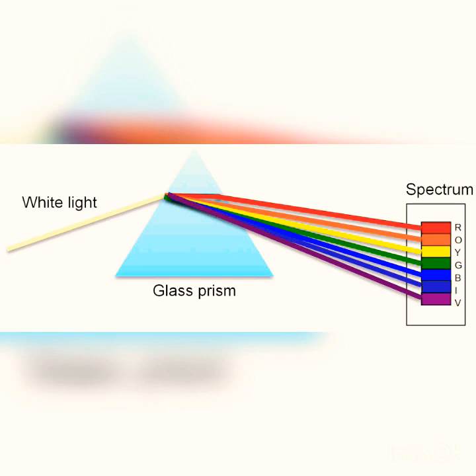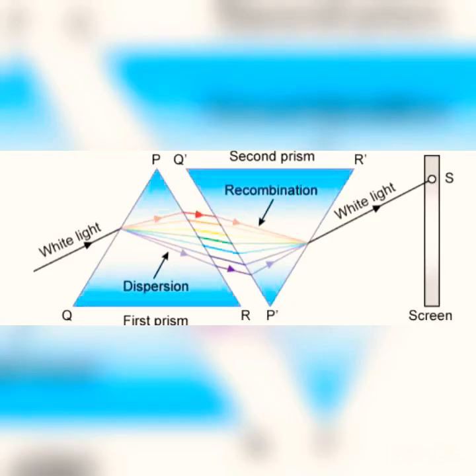Isaac Newton was the first scientist to use a prism to obtain a spectrum of light. He tried to split the colors of the spectrum of white light further by using another similar prism, but he could not get any more colors. He then placed a second identical prism in an inverted position with respect to the first prism, which allowed all the colors of the spectrum to pass through, and found a beam of white light emerging from the other side.